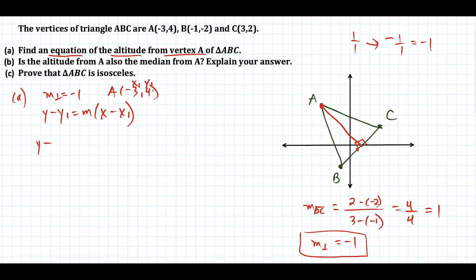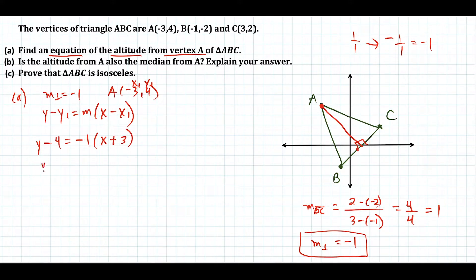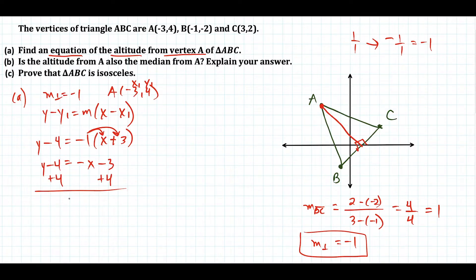So we have y minus 4 equals negative 1 times x minus negative 3, which becomes x plus 3. Distributing the negative gives y minus 4 equals negative x minus 3, and adding 4 to both sides gives the equation of our altitude: y equals negative x plus 1. This is the answer to part A.